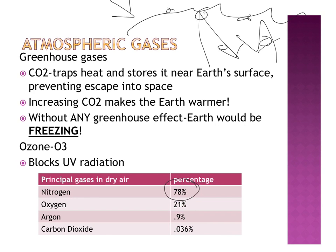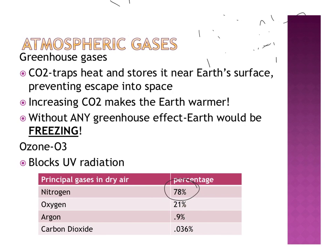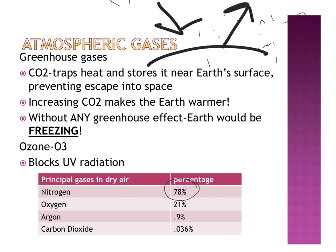We want some of the radiation to actually stay. Otherwise, Earth's surface would be freezing. If we had incoming radiation that hit our surface and all of it bounced back, we would have no retention of heat at all. Some greenhouse effect is fantastic, but we don't want it to get out of hand to where we're trapping so much heat that we don't have the natural mechanisms to release it and counterbalance that effect.